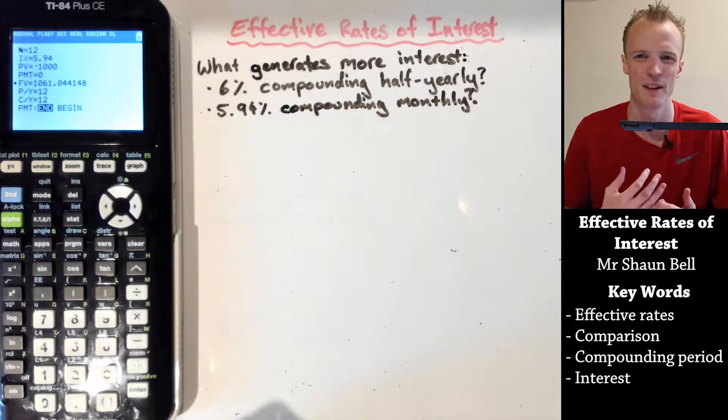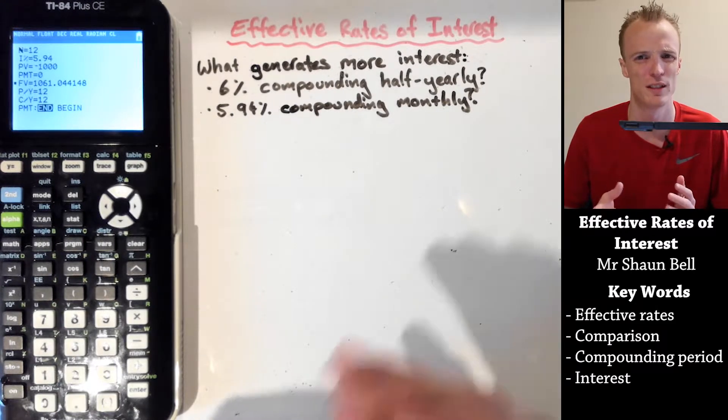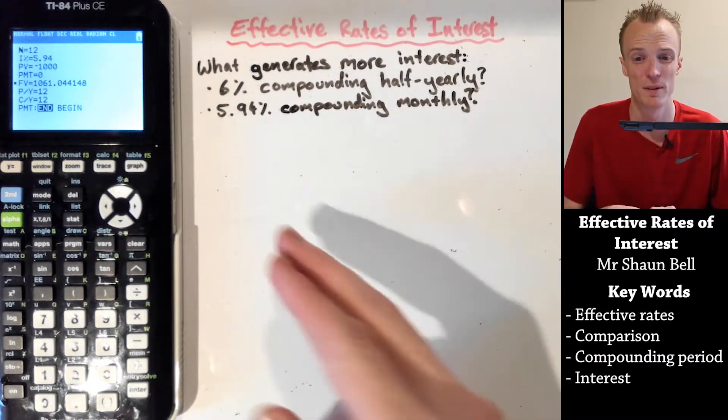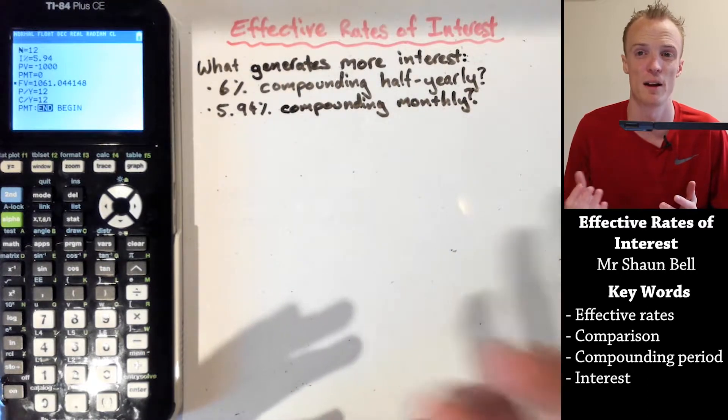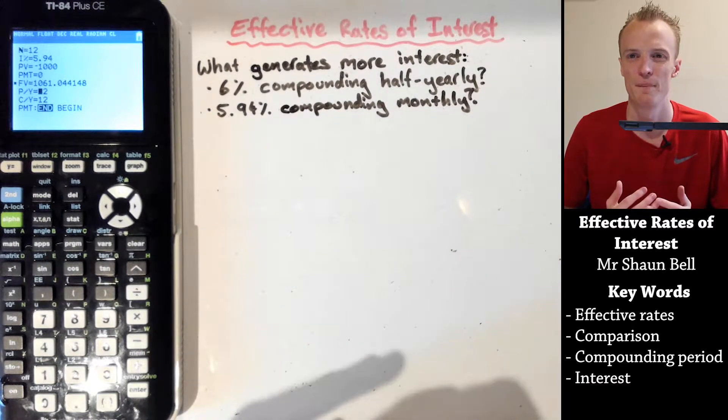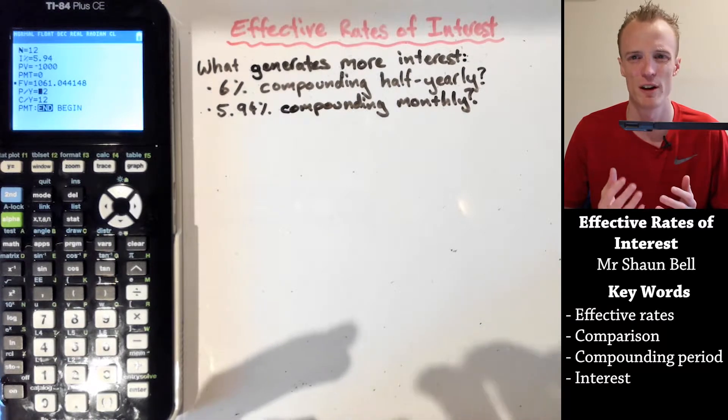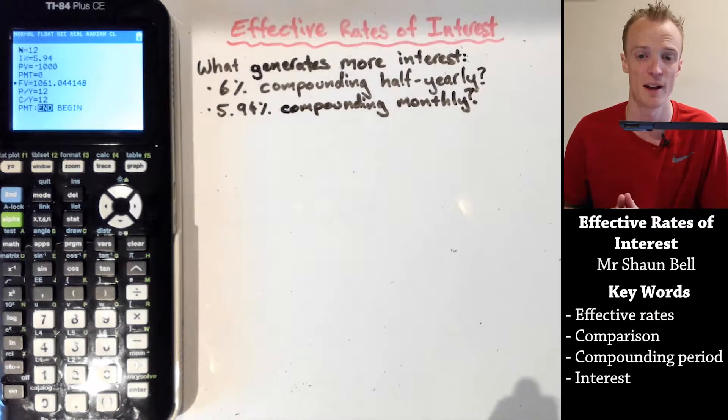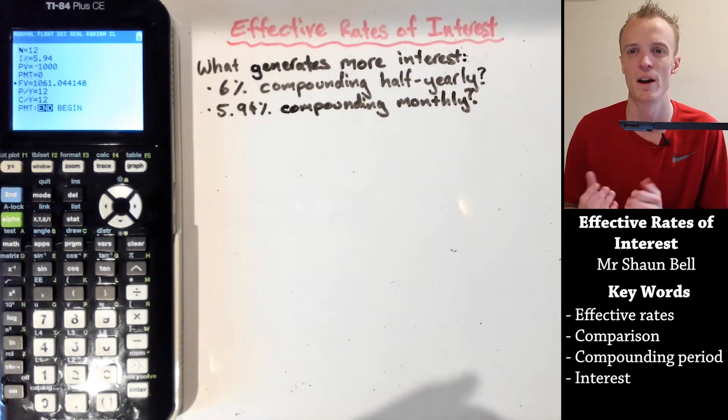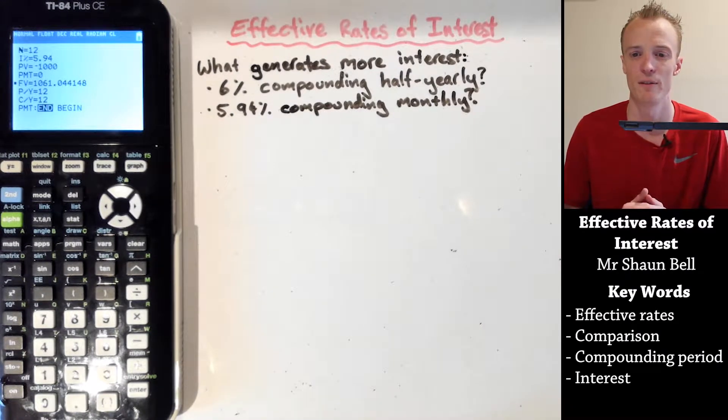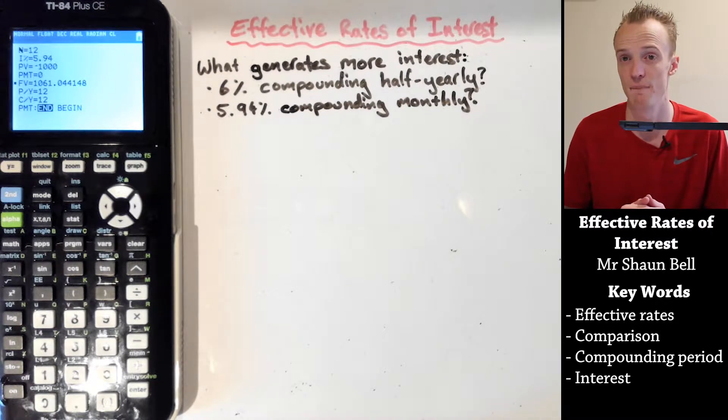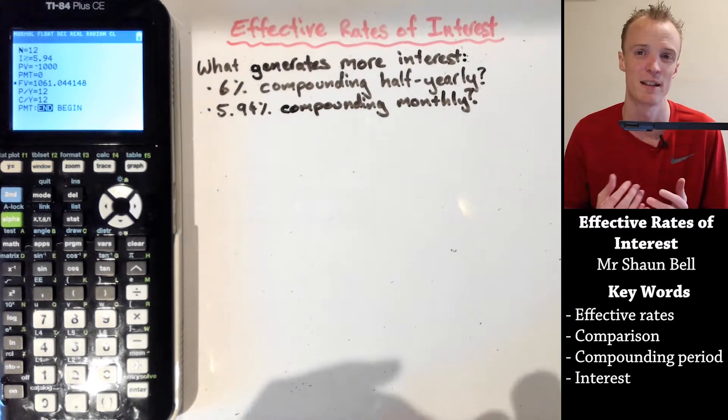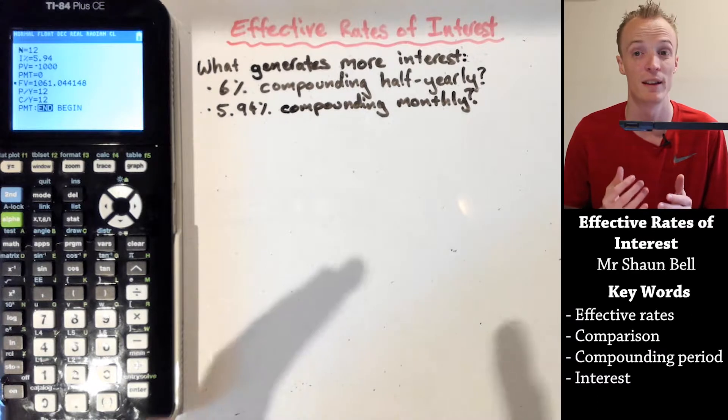So effectively, you're actually generating more interest in this situation at the lower percentage because it's compounding more often. So it can be difficult to make a straight-off comparison when we're looking at the percentage of interest per annum, unless we have another way to measure this. And that's where the effective rates of interest come in. It allows us to compare different interest rates with each other.